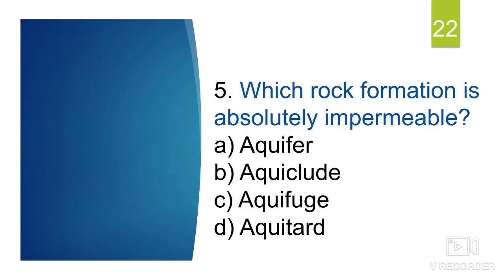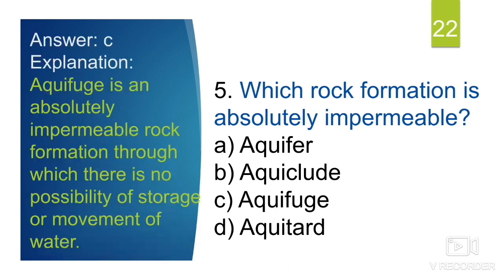The fifth question asks which rock formation is absolutely impermeable — meaning it cannot contain or transmit water at all. The answer is aquifuge. Aquifuge is an absolutely impermeable rock formation through which there is no possibility of storage or movement of water. It can neither transmit water nor contain water. The correct option is C: aquifuge.